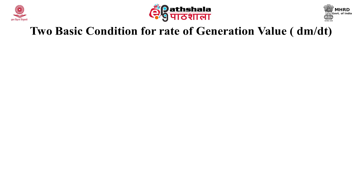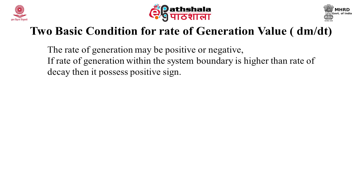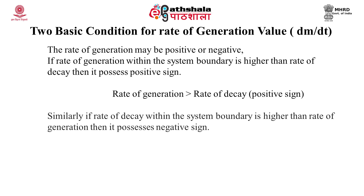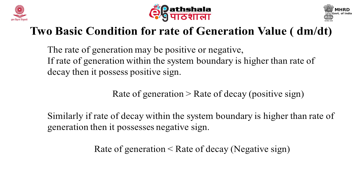There are two basic conditions for the rate of waste generation — it may be positive or negative. If the rate of generation within the system boundary is higher than the rate of decay, it possesses a positive sign (rate of generation > rate of decay). Similarly, if the rate of decay within the system boundary is higher than the rate of generation, it possesses a negative sign (rate of generation < rate of decay).